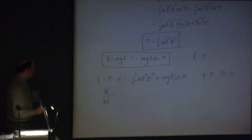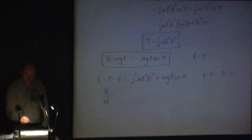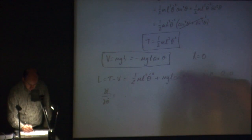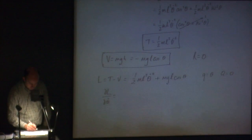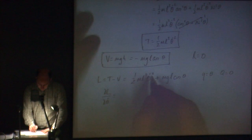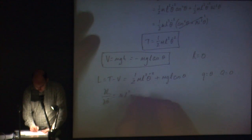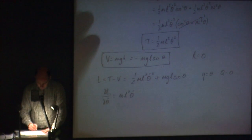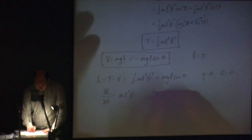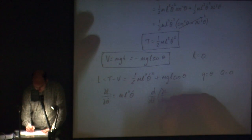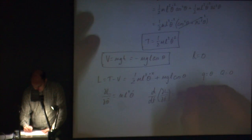The partial derivative of L with respect to theta dot: this term is a constant so it disappears, this term has a theta dot in it, the 2 comes down making ½ times 2 equals 1, so we end up with ml² theta dot. Taking the time derivative of that — d/dt of (dL/d theta dot) — we get ml² theta double dot.